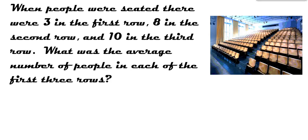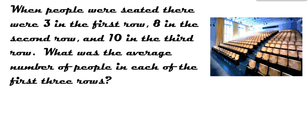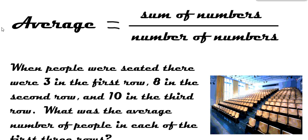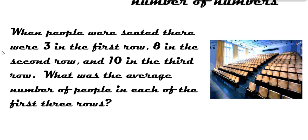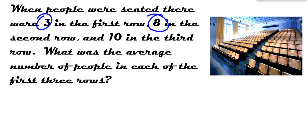All right, it says, when people were seated, there were three in the first row, eight in the second row, and ten in the third row. What was the average number of people in each of the first three rows? Okay, so following our formula, we've got to take the sum of the numbers. So, the sum of the numbers would be three plus eight plus ten, all right? Hopefully, you mentally added those together, but I'll throw them down here just in case you didn't. And you get a total of 21, okay?